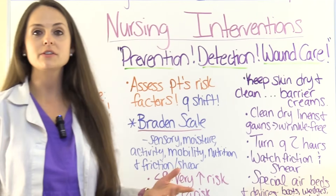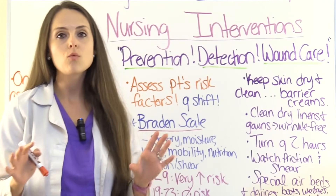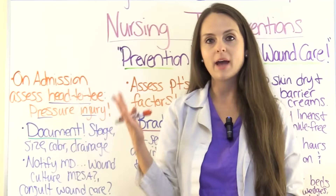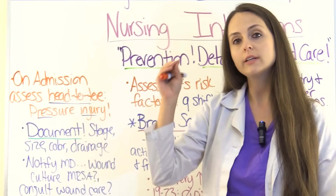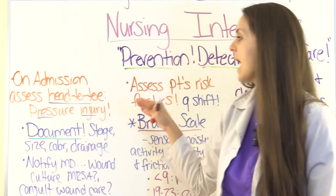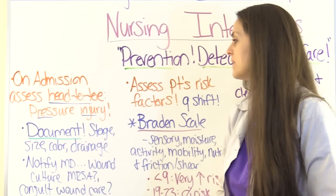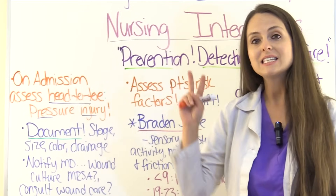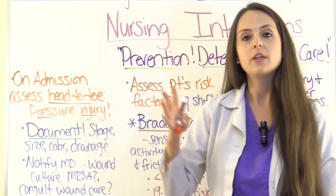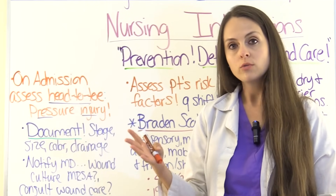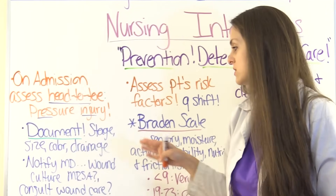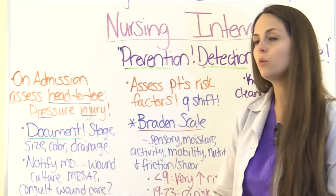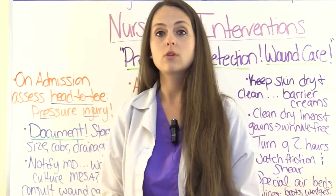Now let's talk about nursing interventions — what we do for a patient with a pressure injury. Our role includes prevention, detection, and wound care. Whenever we receive a patient and perform our head-to-toe assessment, we concentrate on skin integrity and check for any existing pressure injuries. If found, we immediately document the stage, size, color, and drainage. Notify the physician if the wound is severe enough to be cultured, so you can obtain an order for a wound culture. If the wound is very severe, you may need an order to contact the wound care team to assess and prescribe treatment.